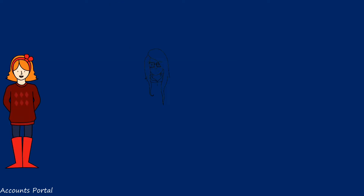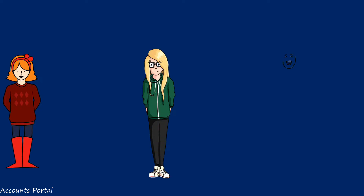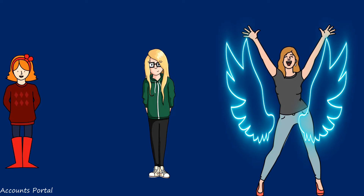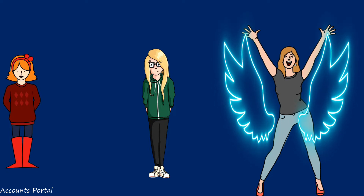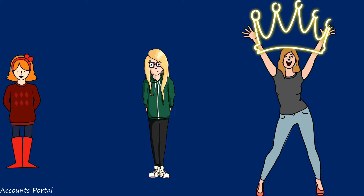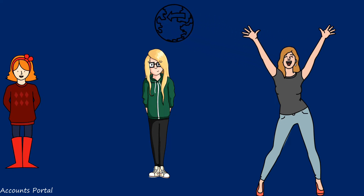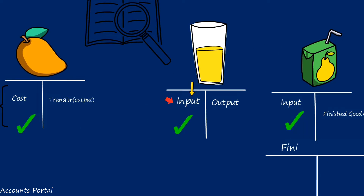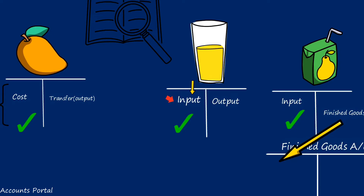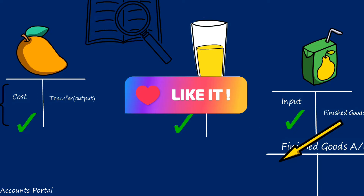For example, you are the output of a foundation process and input for an intermediate process. After some months you become output of the intermediate process and input for the final process, ultimately becoming an asset to the country as a qualified CA, CMA, or CS. Output keeps traveling through processes until the last process, where it is transferred to the Finished Goods Account.